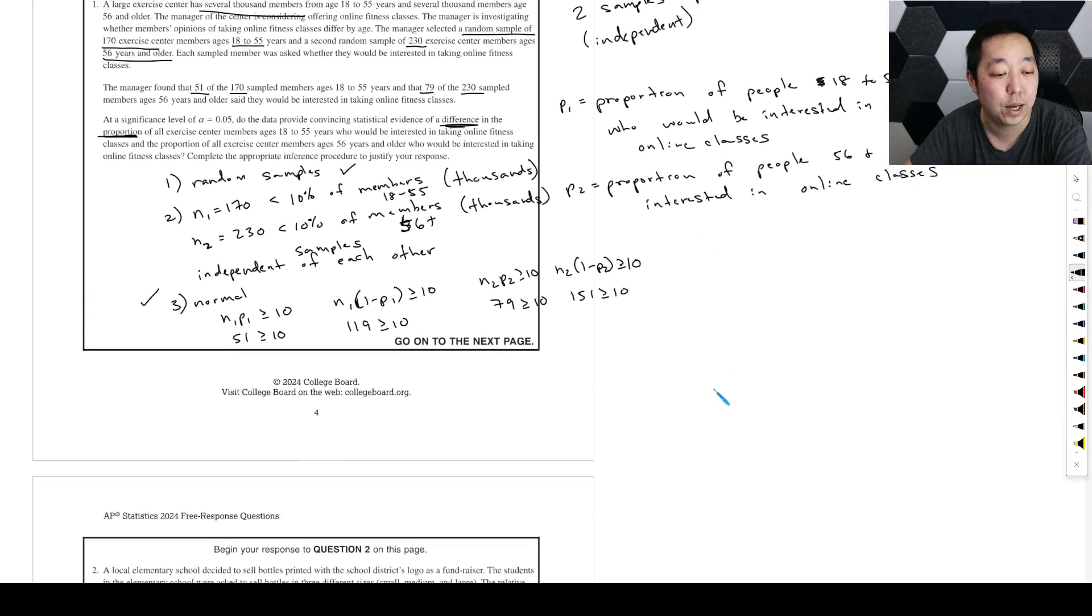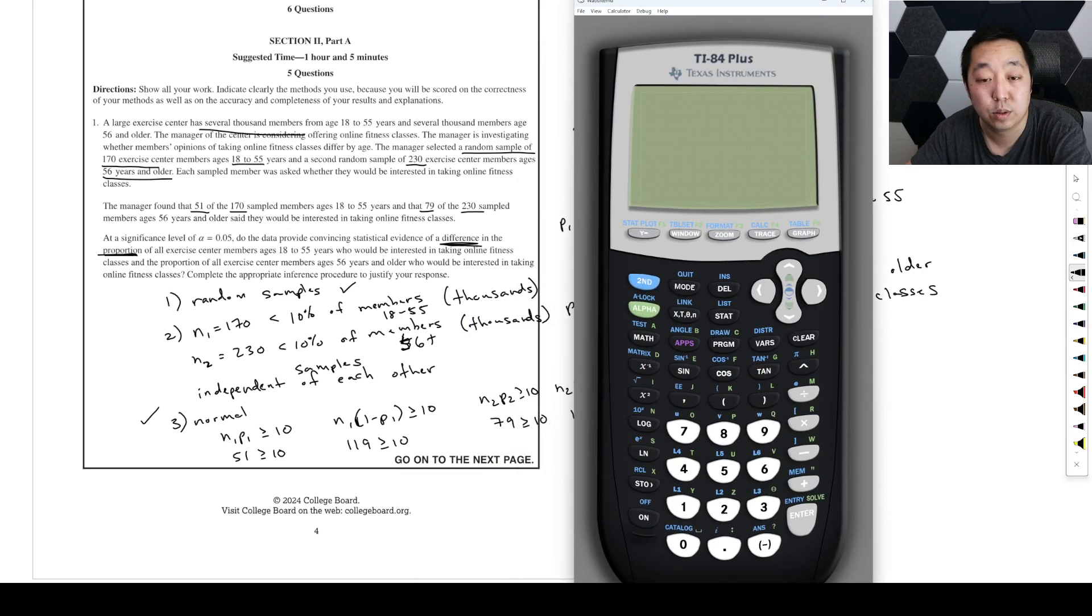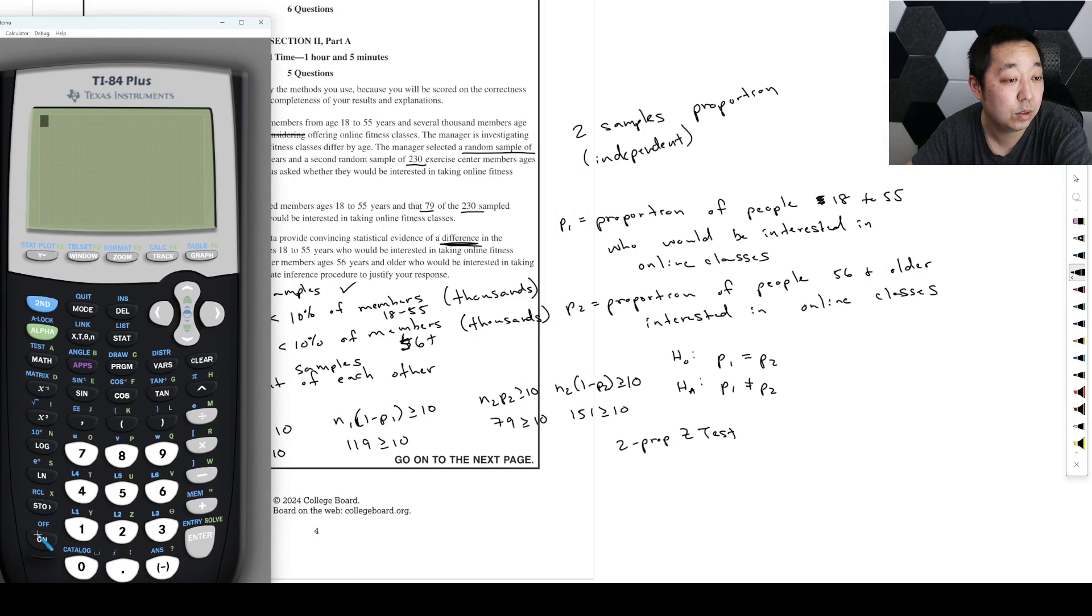So now we're going to run the actual hypothesis test part. And so the null hypothesis is, what we're trying to show is that there's a difference. We don't care if one is greater than the other. We just want to know evidence of a difference. So we want P1 to not equal P2. And our default assumption is that it's going to equal P2. So that is our null and alternative hypothesis. And then we're going to run a 2 prop Z test.